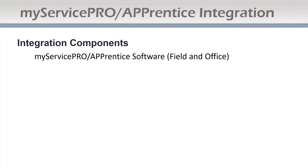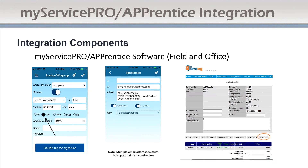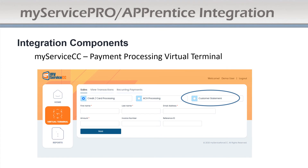Let's look at the integration components a little closer. In the field, there will be a new customer statements button that you can select and implement by adding the link when you send that invoice out. You can also do it from the office — we're going to be adding the ability to send a customer statement link right from the office as well. The other way you can do it is from our MyServiceCC virtual terminal. This is just a screenshot of where you can access customer statements — go to the virtual terminal video for more details.